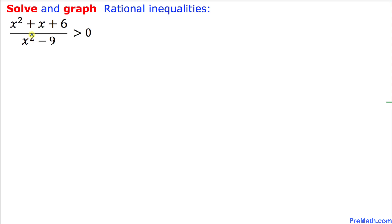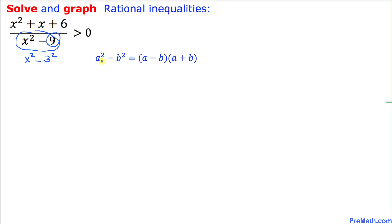Now let's focus on the denominator, x squared minus 9. We can write this as x squared minus 3 squared, which represents the difference of two squares. Using the fact that a squared minus b squared equals a minus b times a plus b, this factors to x minus 3 times x plus 3.